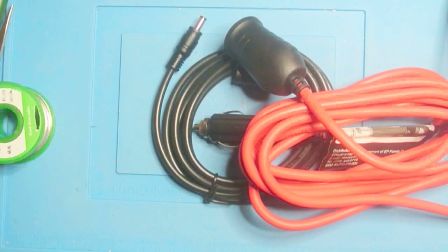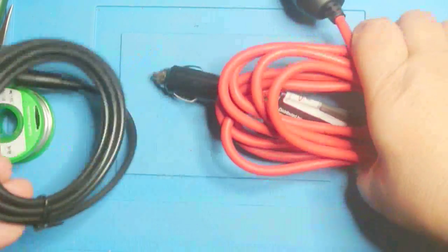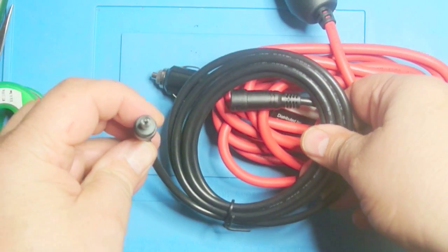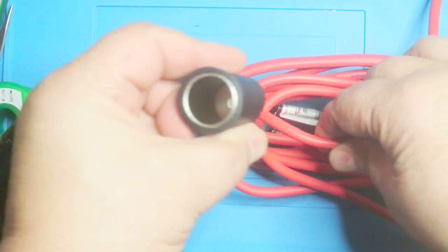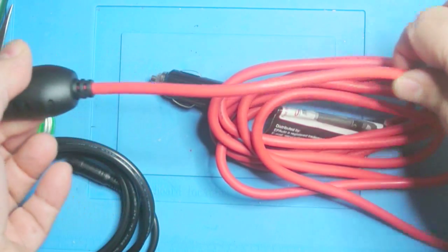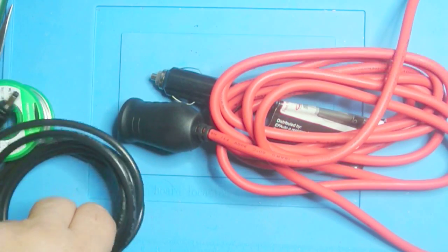For the cable, we have a couple options. Number one is we can use one of these power cables that have the 2.1mm jacks on them. The other option is something like this heavy duty cigarette lighter. I think this is the one I'm going to use because it has a little more utility than just this one.